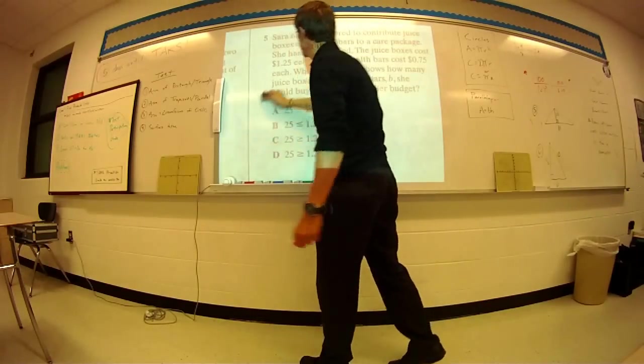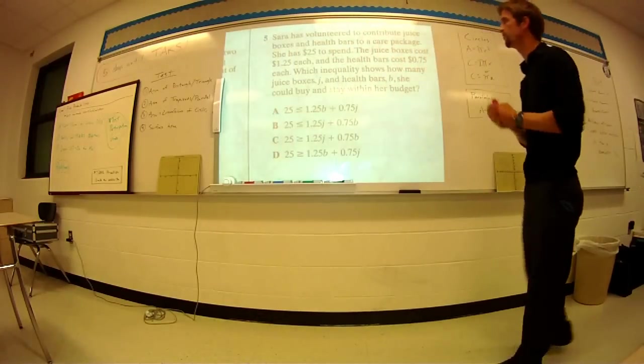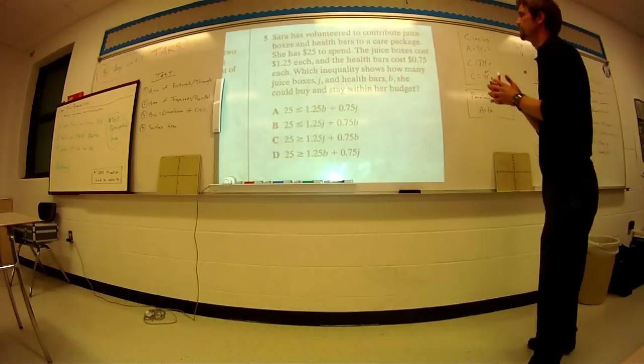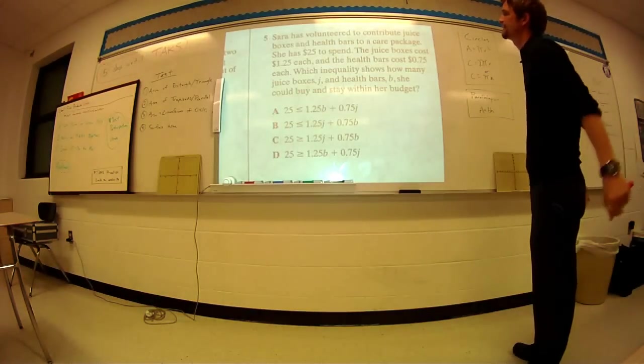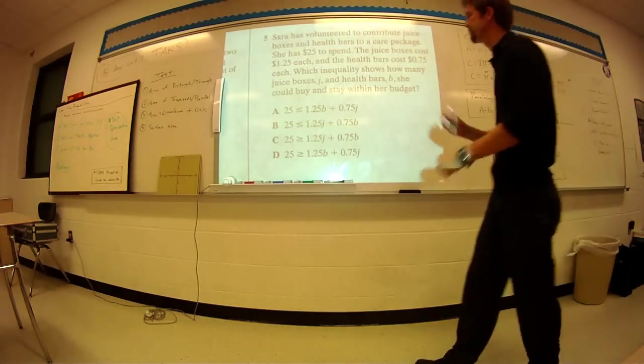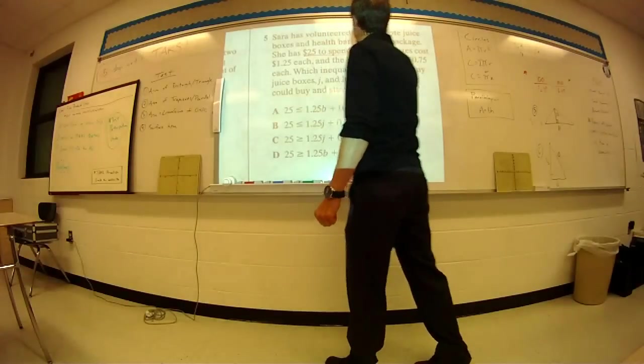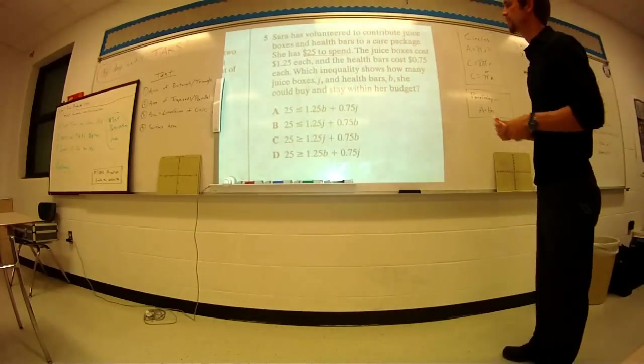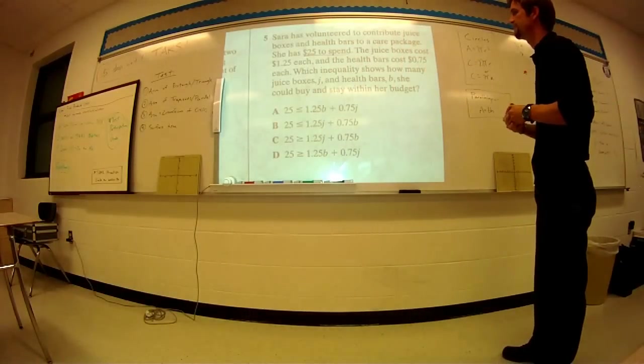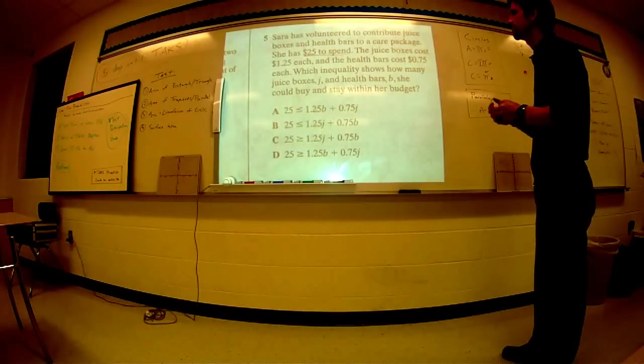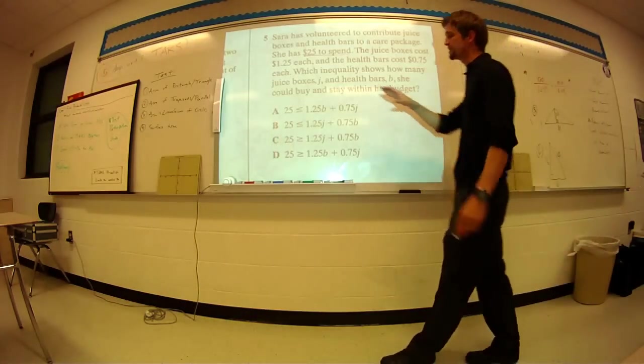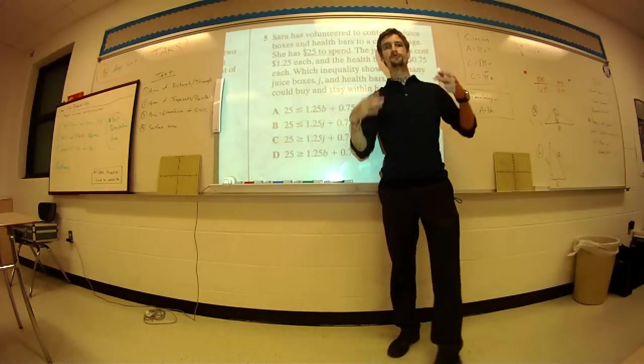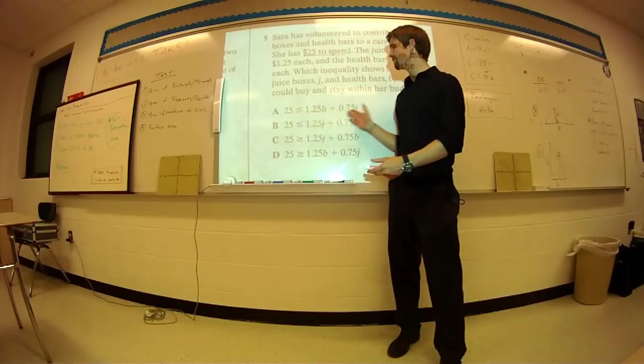Now we've got an inequality. I find it's starting to get a little bit more difficult. Sarah has volunteered to contribute juice boxes and health bars to a care package. She has $25 to spend. The juice boxes cost $1.25. Health bars cost $0.75 each, which inequality shows how many juice boxes J and health bars B she could buy and stay within her budget. First thing, remember, I said whenever we're talking about these, use a word, because this is a lot of information here.